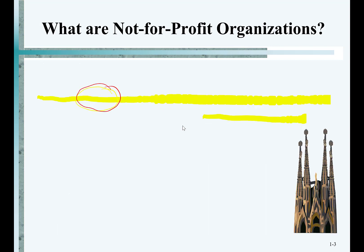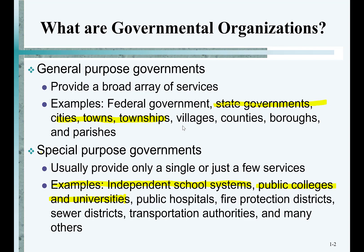We also have public colleges and universities, which are part of the government. San Jose State and the state universities are examples of public colleges, as are community colleges. Public colleges follow the same accounting as states, cities, and counties. All of these local governments — cities, counties, states — have to follow the requirements we're going to study in this class.